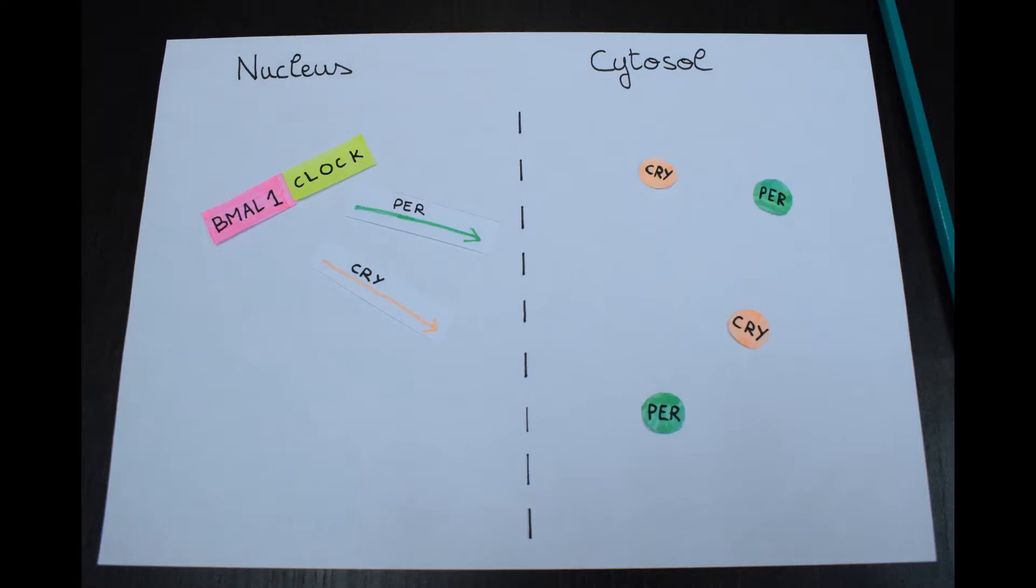The cycle starts again, forming the negative feedback loop that generates the 24-hour cycle that is the circadian rhythm.